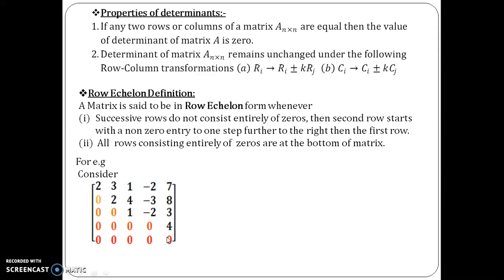Now, one very important remark regarding this row echelon form definition is that, if you observe in this matrix, the number of zeros goes on increasing. If you observe here carefully, on the first row there are no zeros, it is zero, then there is 1 zero, then there are 2 zeros.